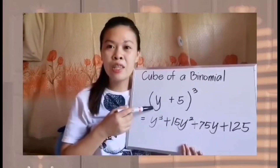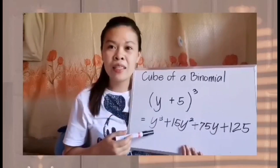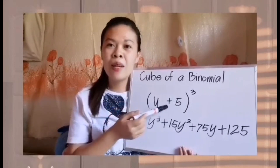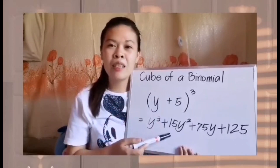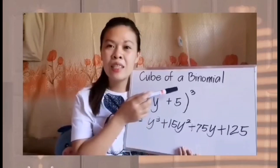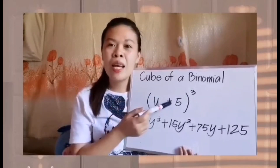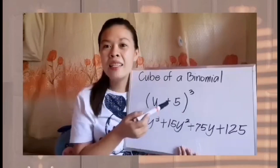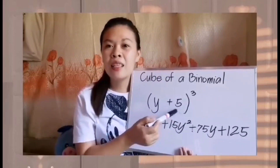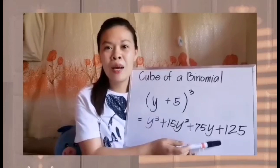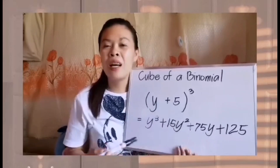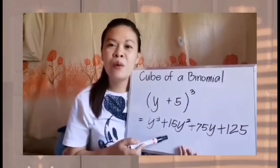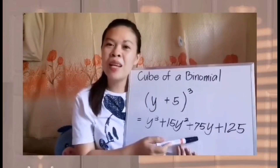Follow the steps. First, get the cube of the first term; your answer is y cubed. Next, get the product of the exponent, the square of the first term, and the second term, so you will have positive 15y squared. Next, get the product of the exponent, the first term, and the square of the second term, so you will get positive 75y. And last, get the cube of the second term, positive 5, which equals positive 125. Therefore, the cube of the quantity of y plus 5 equals y cubed plus 15y squared plus 75y plus 125.